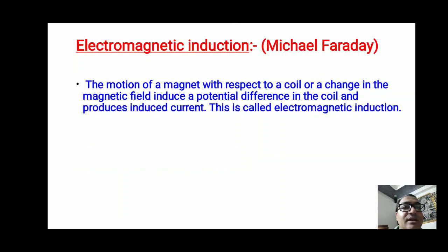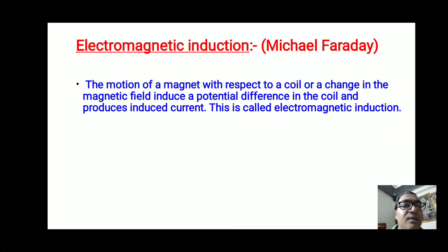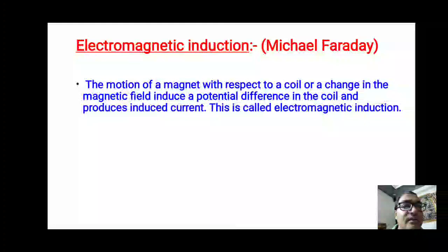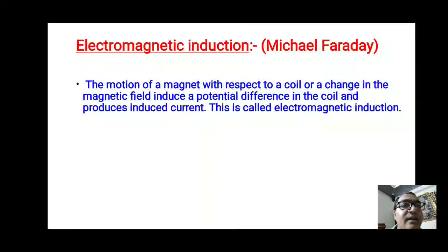Let's start with what is meant by Electromagnetic Induction. The motion of a magnet with respect to a coil, or a change in the magnetic field, induces a potential difference in the coil and produces an induced current. This is called electromagnetic induction. When we give motion to a magnet near a coil, or use a battery to create a magnetic field in a second coil, the galvanometer needle deflects due to the induced current — that is called electromagnetic induction.